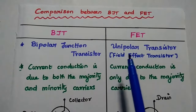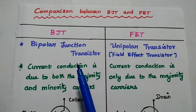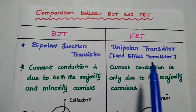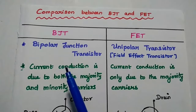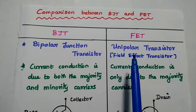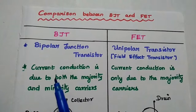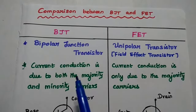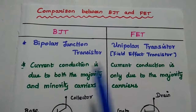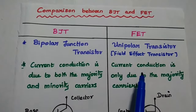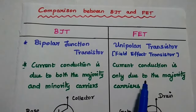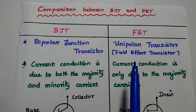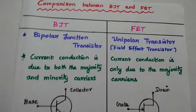Comparison between BJT and FET: BJT means bipolar junction transistor; FET means field effect transistor. BJT is bipolar — the current conduction is due to both the majority and minority carriers. FET is unipolar — the current conduction is only due to the majority carriers, not the minority carriers. Hence it is called a unipolar transistor.